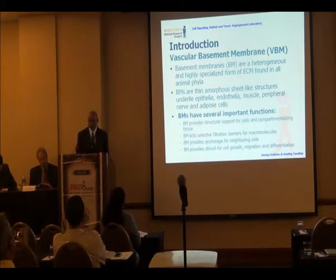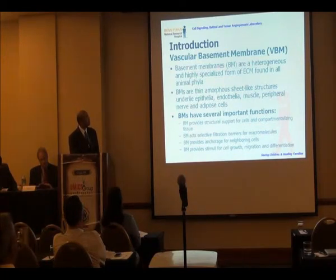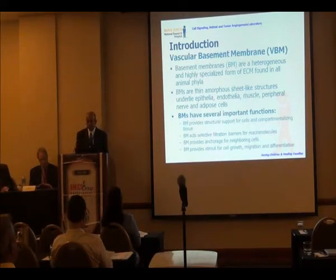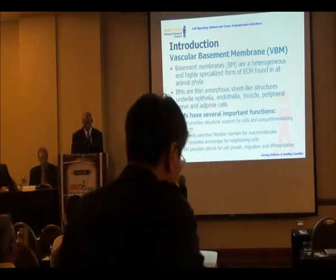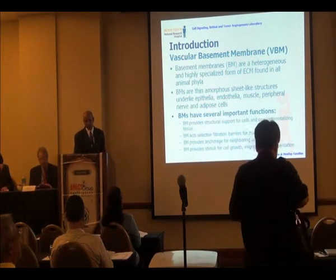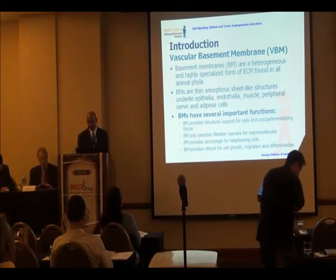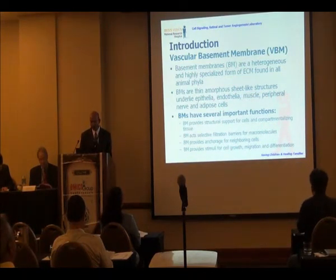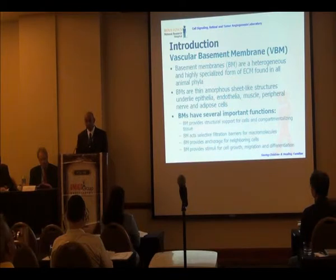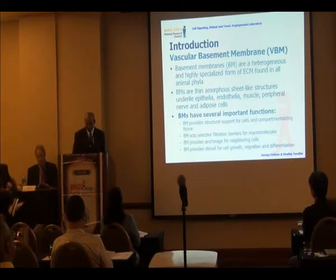The vascular basement membrane is a heterogeneous and highly specialized form of extracellular matrix. It is almost present in every tissue — a thin amorphous sheet-like structure underlying most organs including endothelia, muscle, peripheral nerve, and fibrous cells. It has special functions: structural support for cells, compartmentalization of tissue, a selective filter barrier for macromolecules, support for neighboring cells, and it helps with cell migration and differentiation.